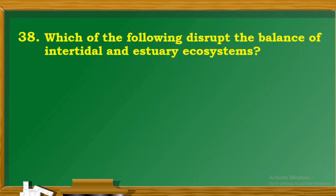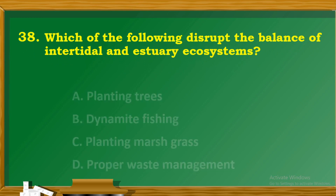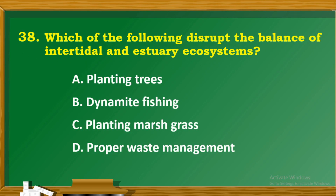Question 38: Which of the following disrupts the balance of intertidal and estuaries ecosystems? A. Planting trees. B. Dynamite fishing. C. Planting marsh grass. D. Proper waste management.